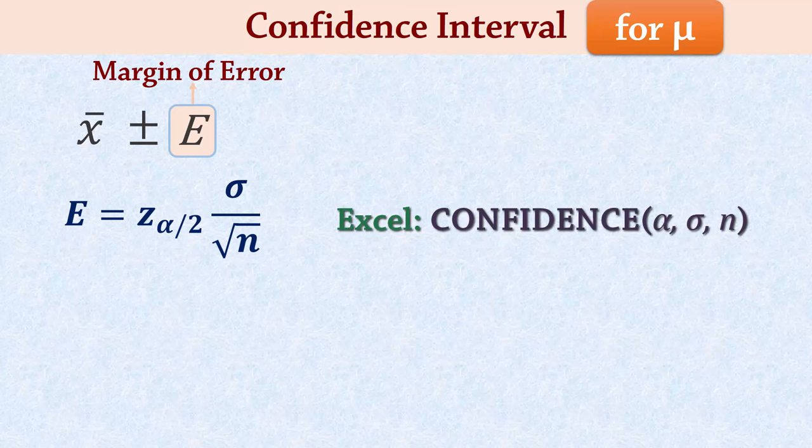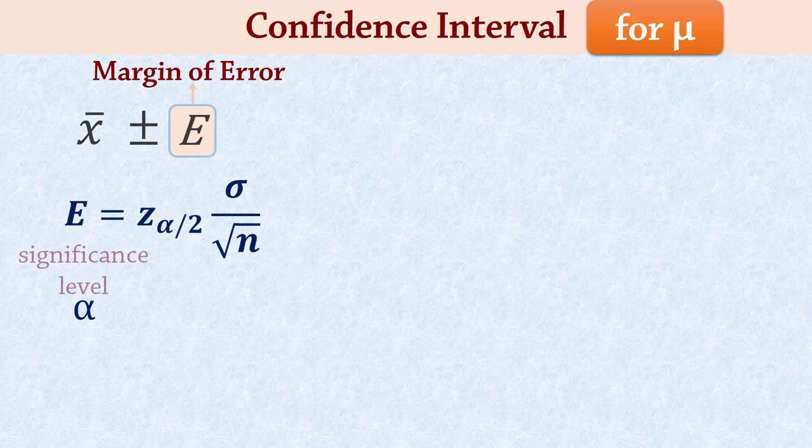Where alpha, the significance level, is 1 minus the confidence level, and correspondingly, the confidence level is 1 minus alpha.